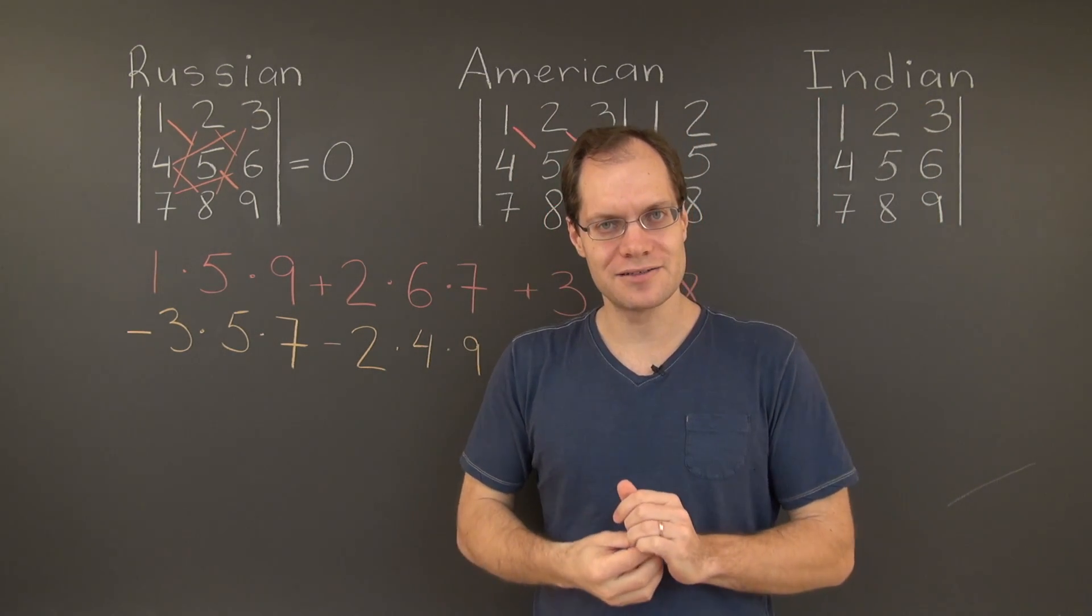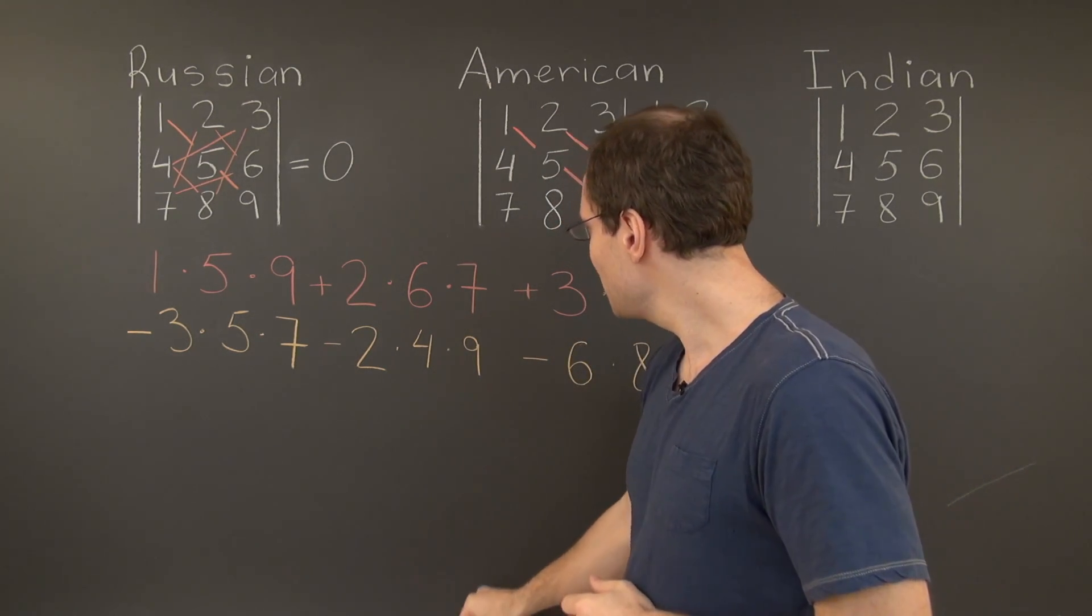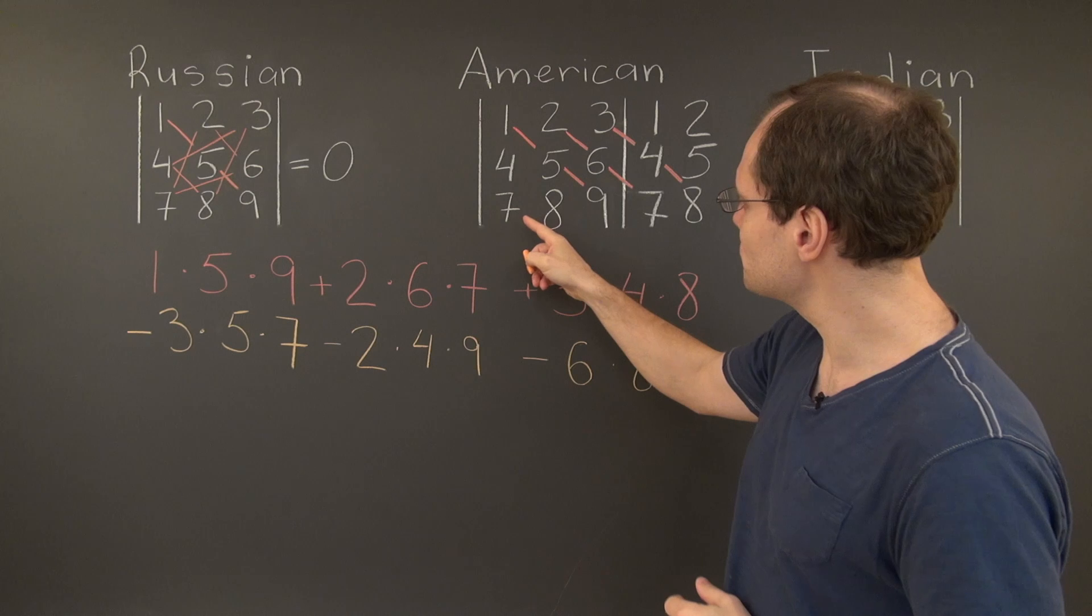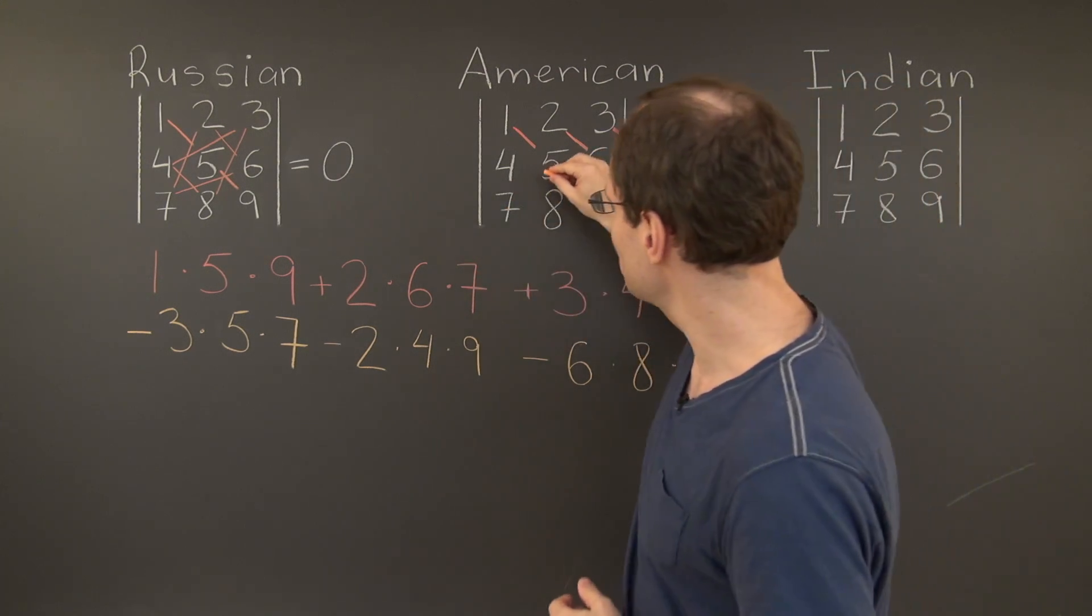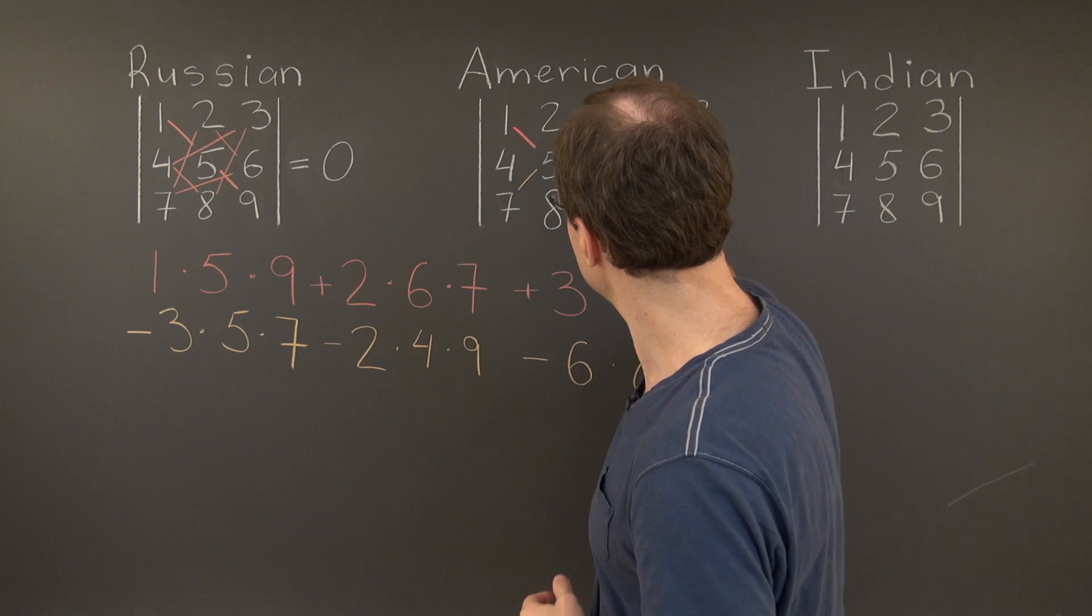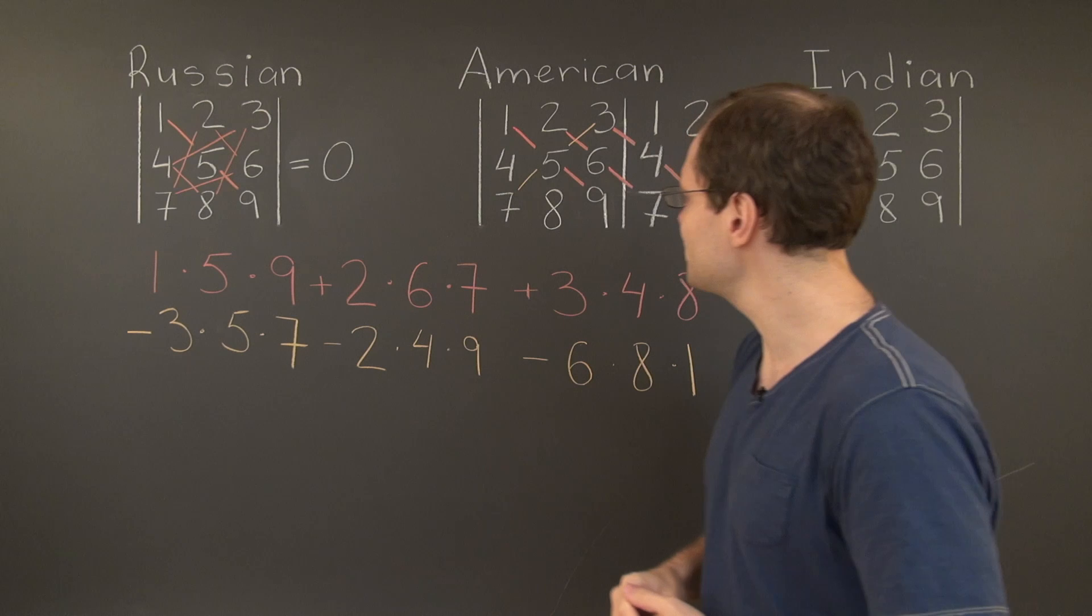Now on to the negative patterns. The negative patterns will too be straight lines, and they'll be straight lines going up and to the right from these three entries, 7, 8, and 9. Here's the first one, 7, 5, 3. Here it is, minus 3 times 5 times 7.